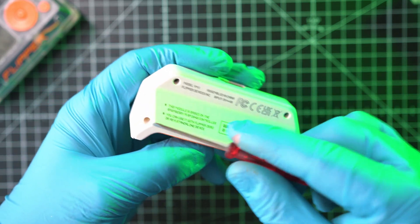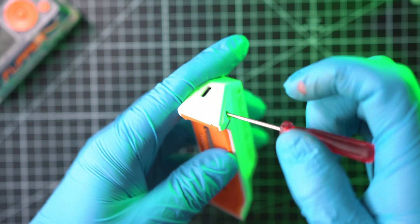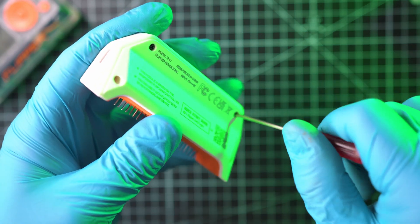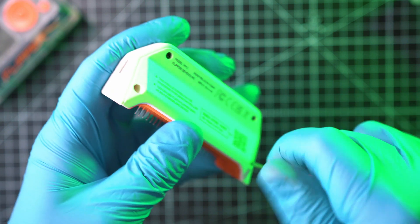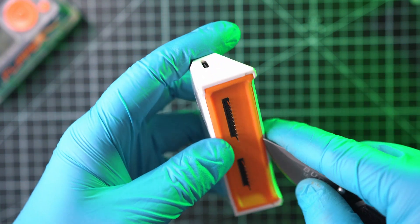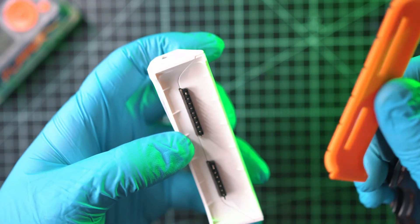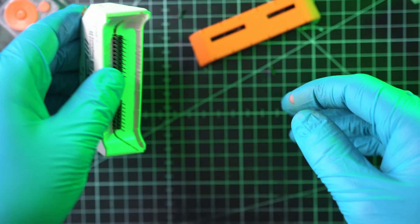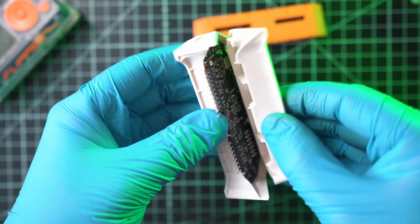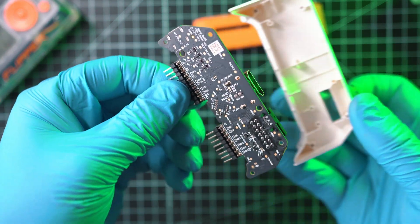Video game module is held together by 4 screws for phillips head screwdriver. Next, this orange cushion can be removed. And module can be separated exposing single PCB located inside.